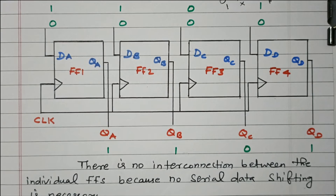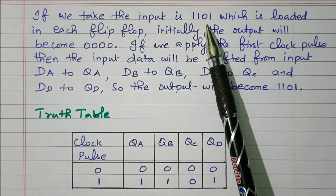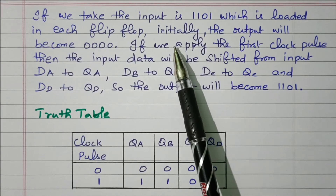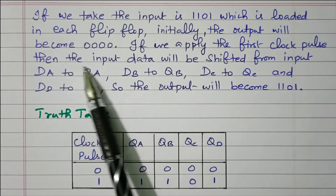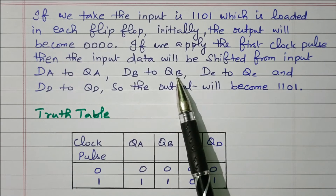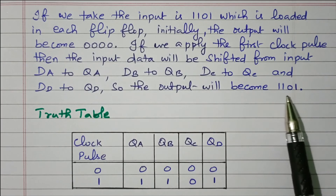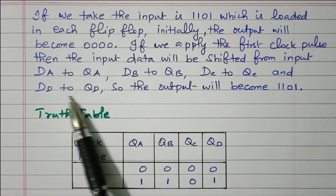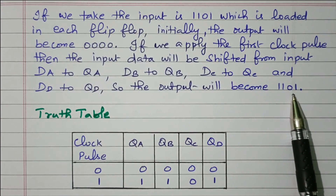Now we will see some more description and the logic table. If we take the input 1101, which is loaded in each flip-flop, initially the output will be 0. If we apply the first clock pulse, the data will be shifted from input DA to QA, DB to QB, DC to QC, and DD to QD. So the output will be 1101. After the first clock pulse, the input will be available at the output, and we get 1101 as output.